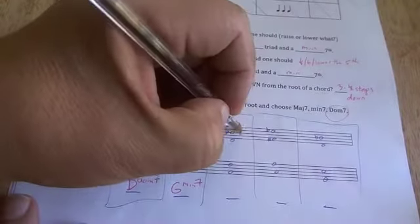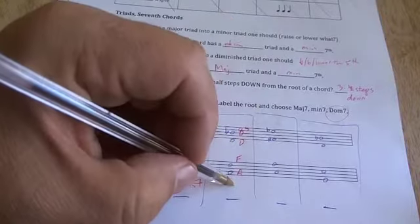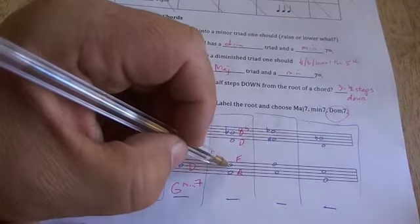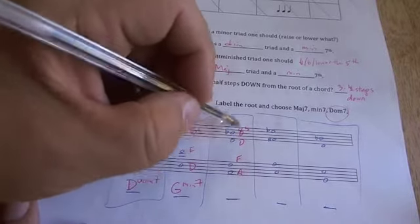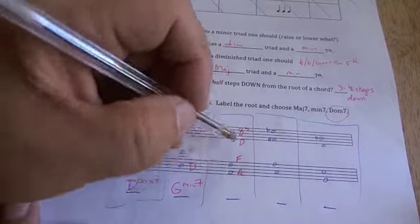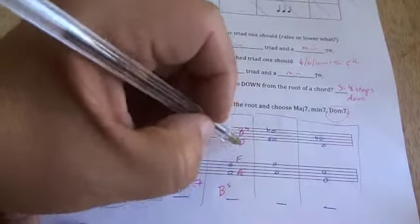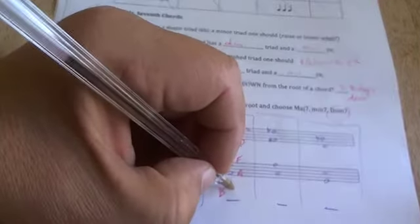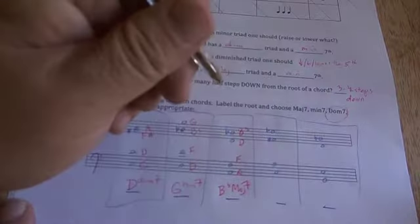This chord right here is a B-flat, a D, an F and an A. You can go in any direction you want. A-C-E-G, F-A-C-E, and then D-F-A-C, close but not quite. B-D-F-A, it's a B chord, it's a B-flat chord. Now B-flat-D-F makes a major triad and A is a half step below, which is a major seventh. Major triad, major seventh, is a major seventh chord.